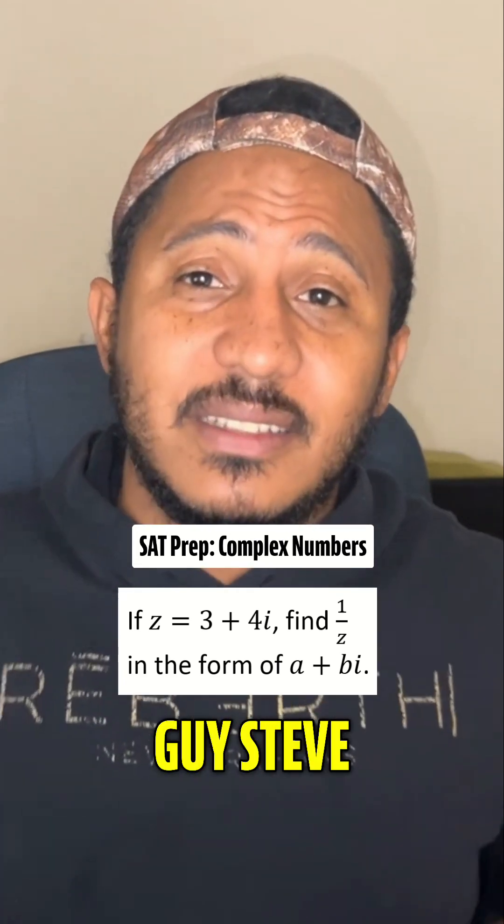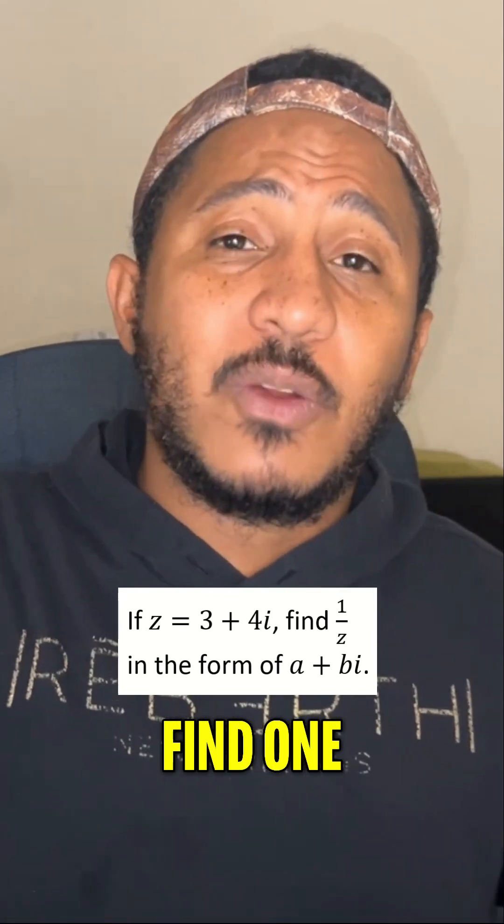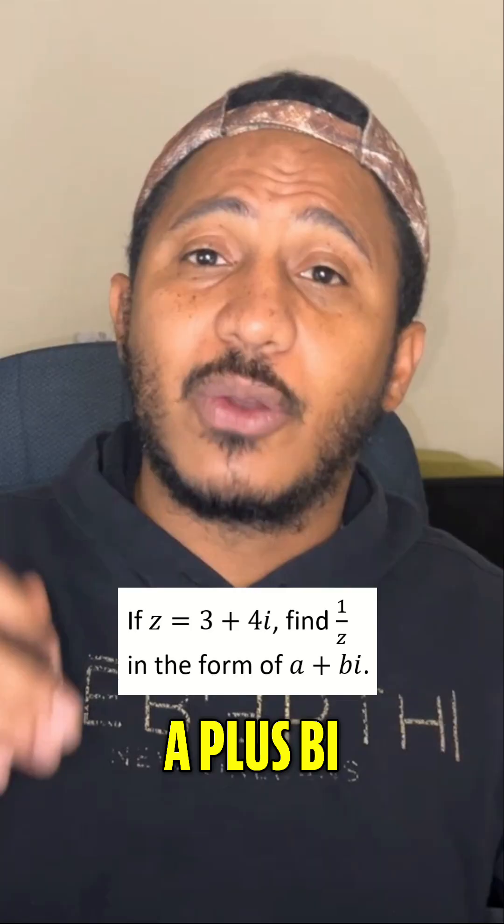T prep, here we go. This is the math guy, Steve. If z equals 3 plus 4i, find 1 over z in the form of a plus bi.